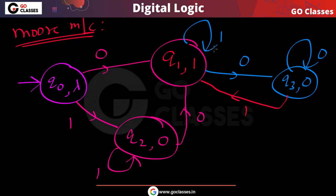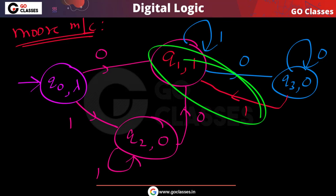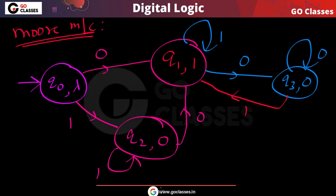So in that state, if 1 comes you print 1, and if 0 comes you print 0. This is how you can create a Mealy machine and a Moore machine for incrementing a binary number. If anyone has any doubt, you can ask in the comments. Thank you.